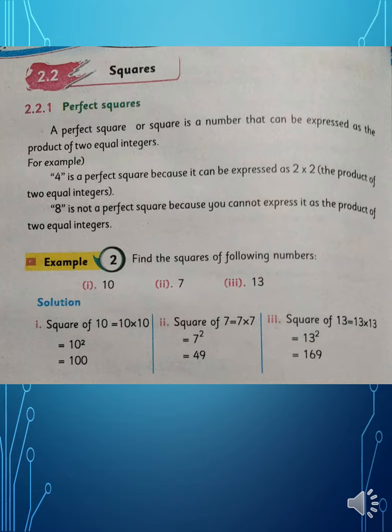Now we start the topic of square. What is a square? A square in geometry is a box shape with four equal sides. A perfect square is a number that can be expressed as the product of two equal integers. When you multiply two same integers together, the answer is called a perfect square.